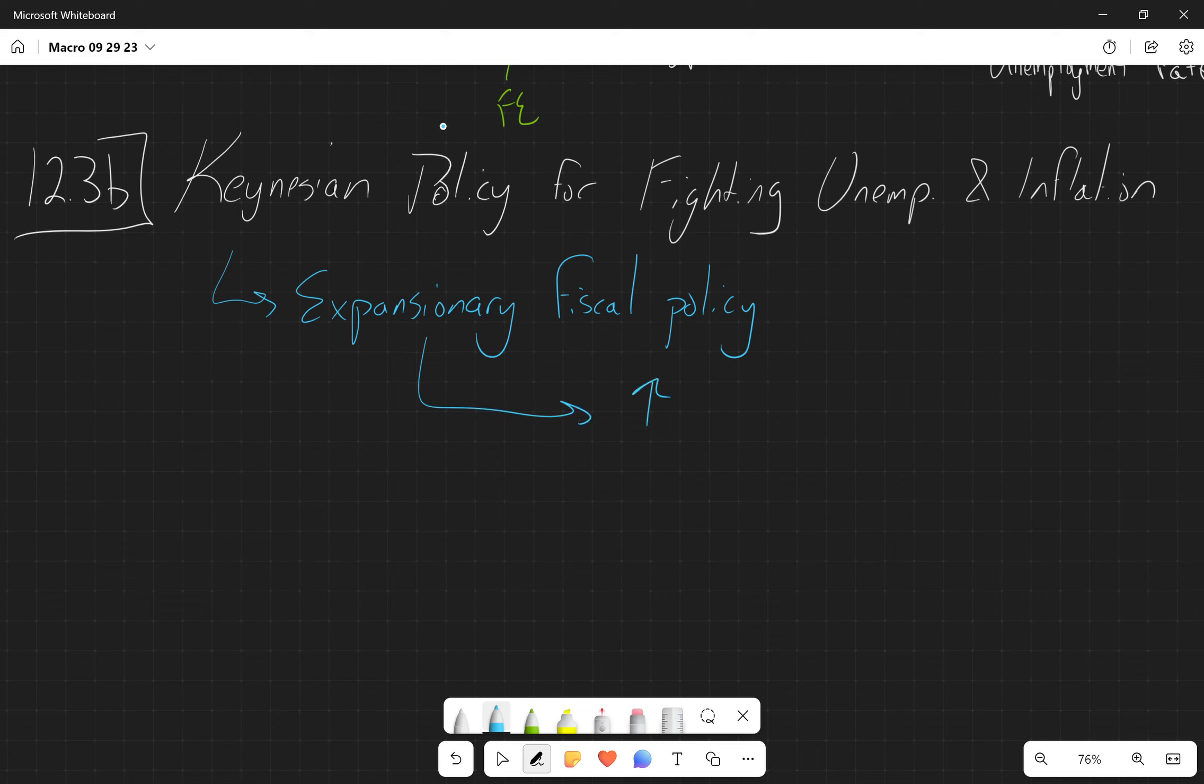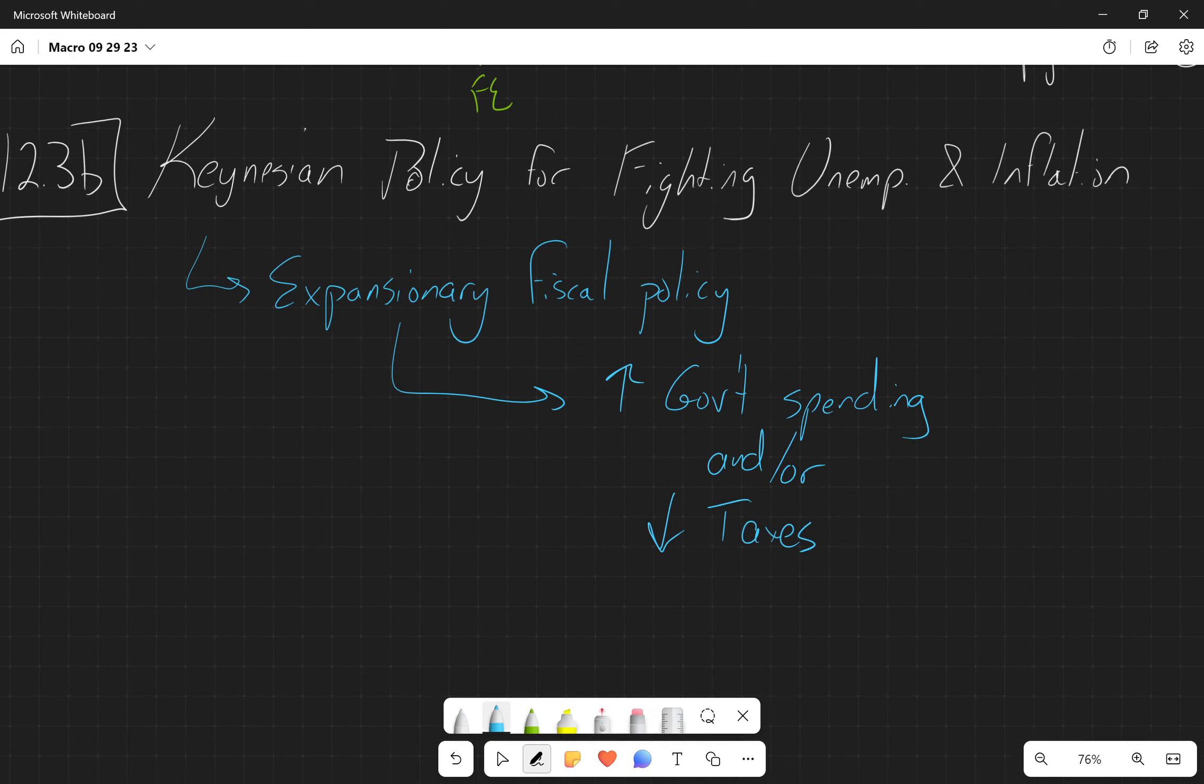Or a decrease in taxes. Both of these things are going to stimulate aggregate demand, which is going to help move the economy out of recession.